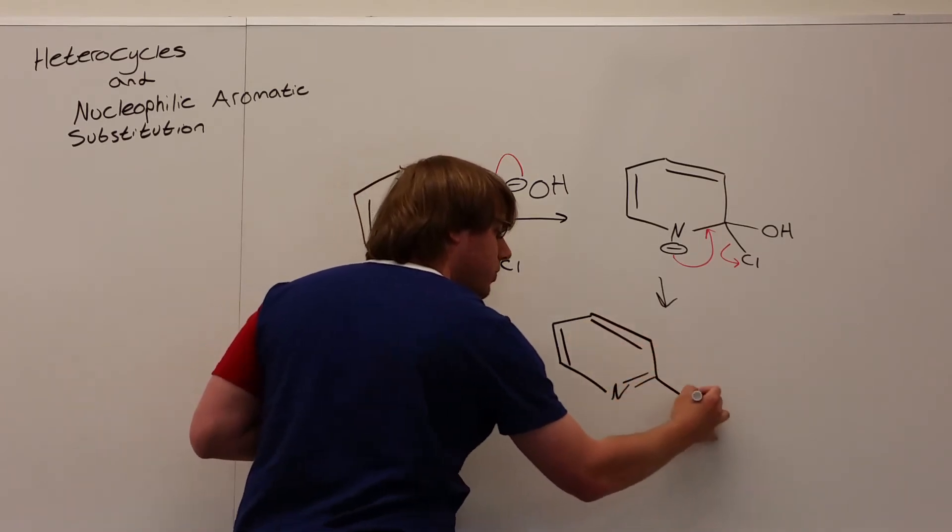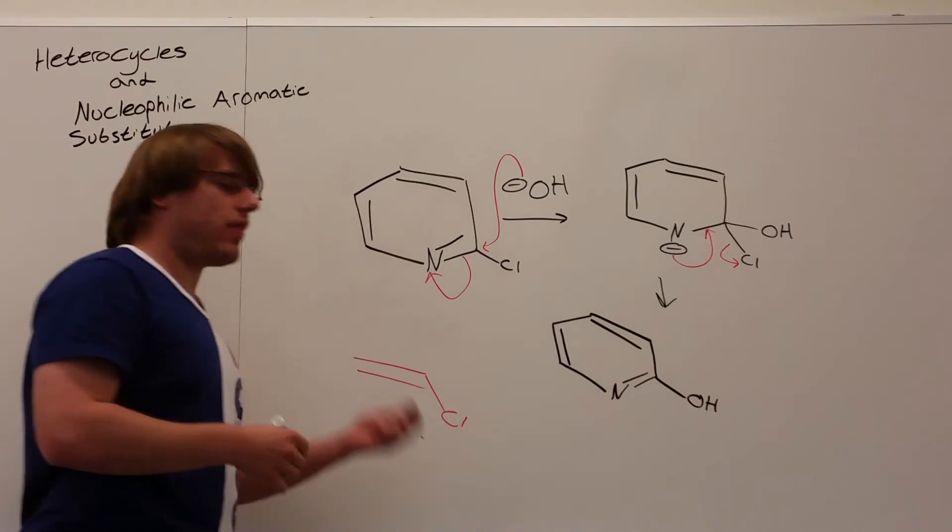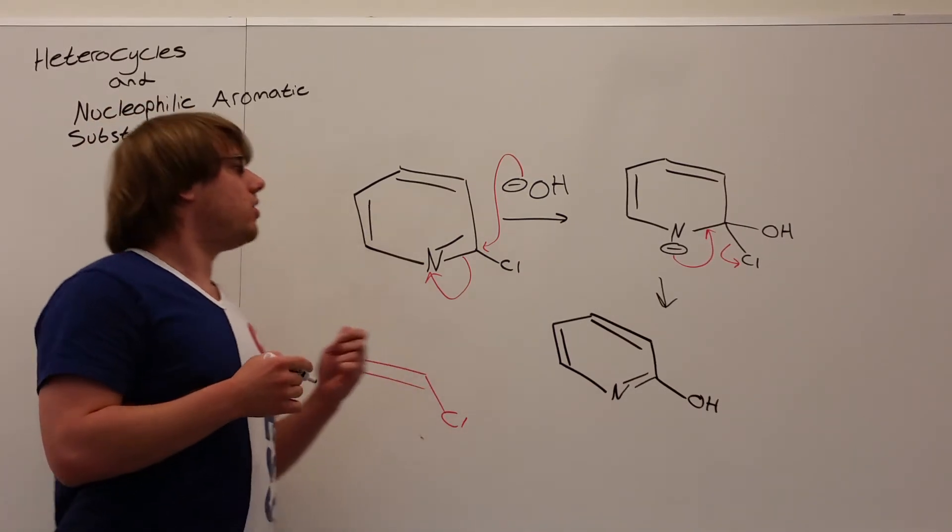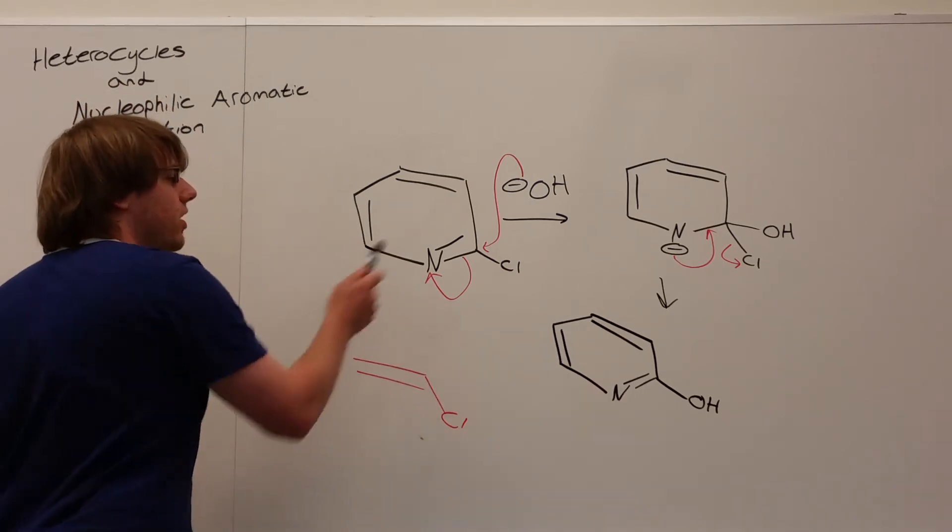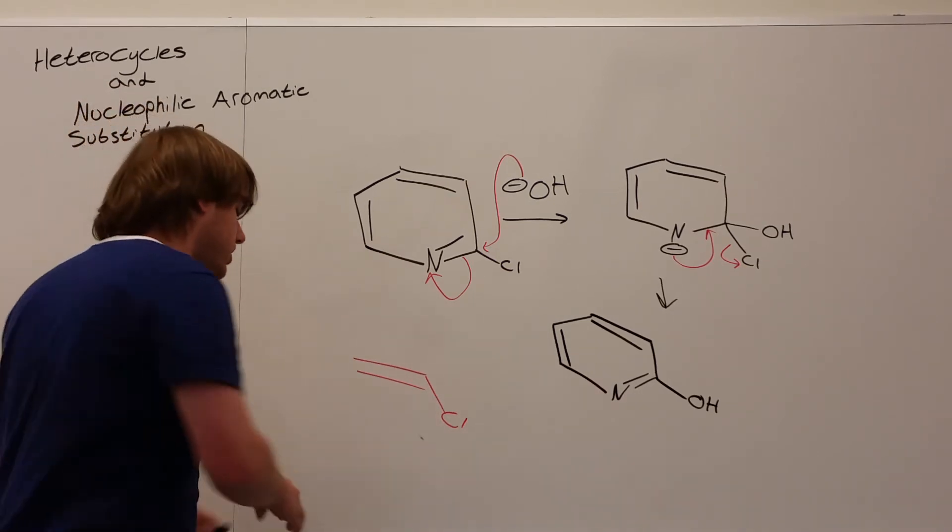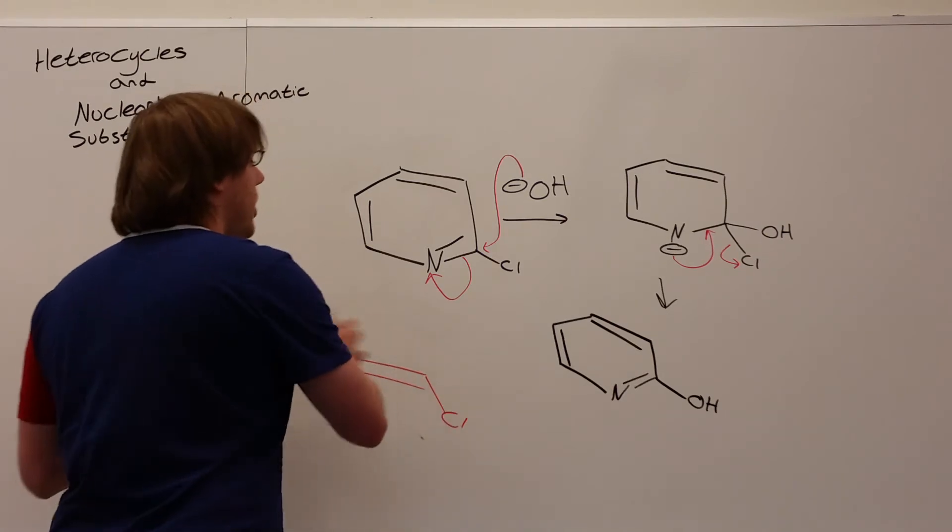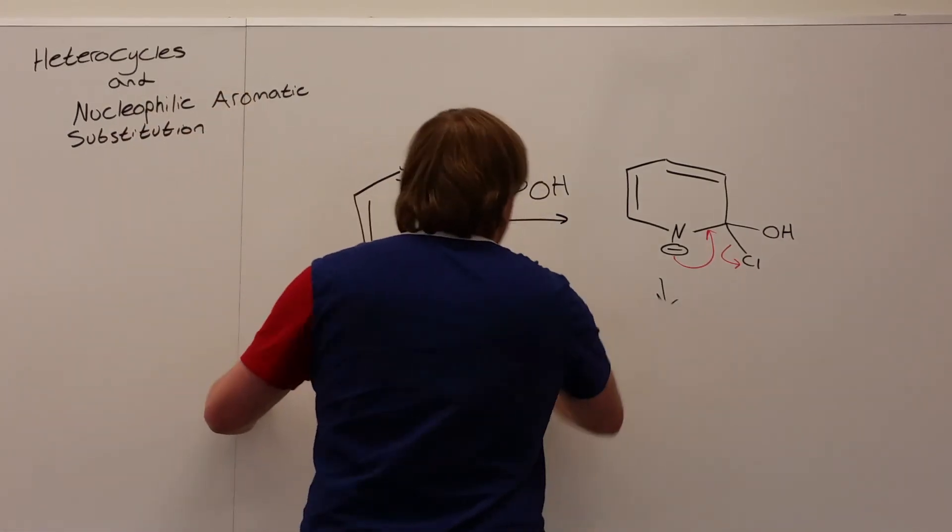So we get that double bond back down there. And now instead of a chlorine, we have an OH. And that's the general gist of any nucleophilic aromatic substitution on a heterocycle. And again, typically this is the one I've seen in all the practice problems they've shown us.